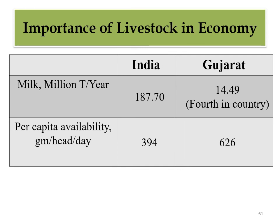Per capita availability of milk is 394 grams per head per day for India overall. This means that dividing total annual milk production by the total population, every Indian can get 394 grams of milk per day.